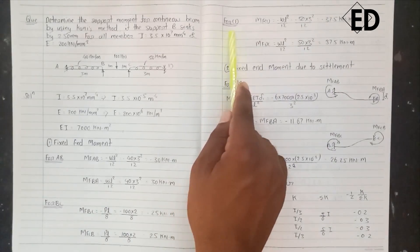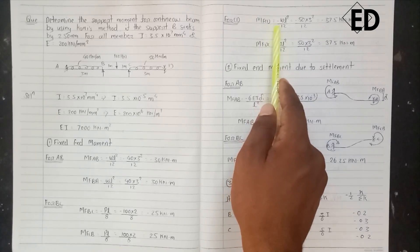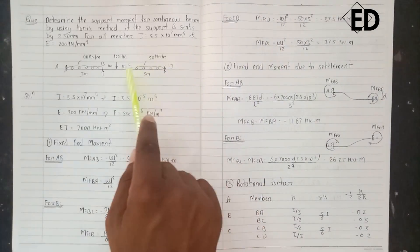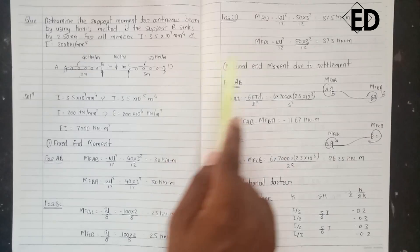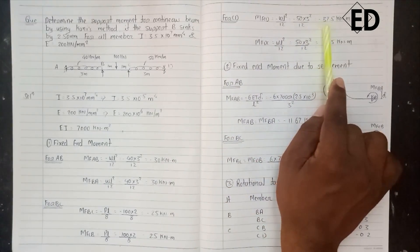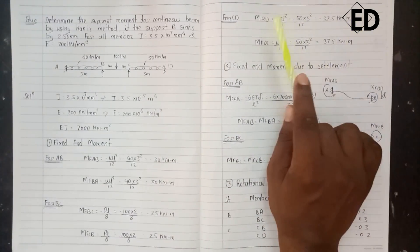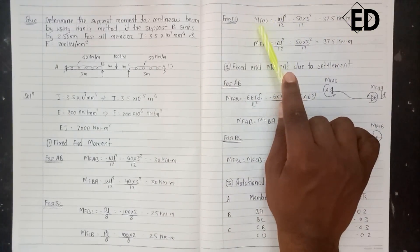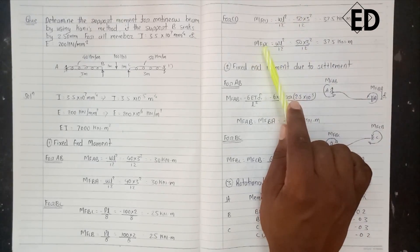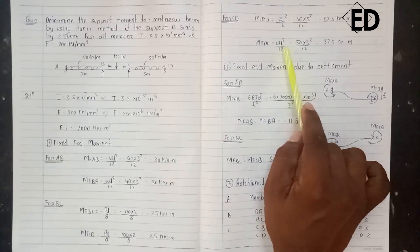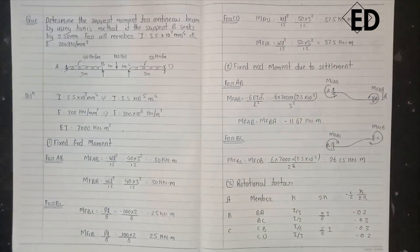For span CD, the fixed end moment from C to D is minus WL²/12 because the UDL is acting between C and D, giving us minus 37.5 kN·m. The fixed end moment from D to C is WL²/12, which gives us 37.5 kN·m.